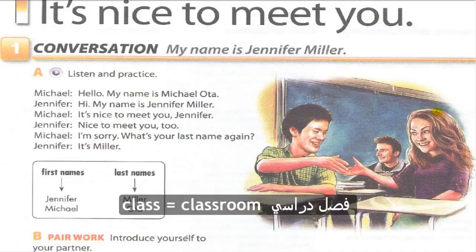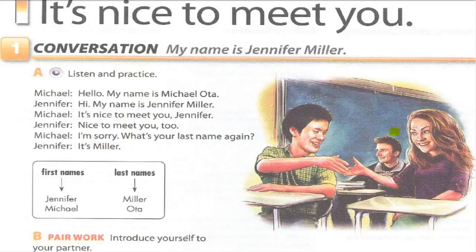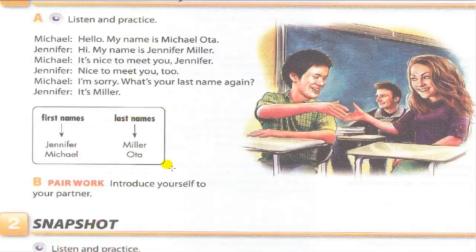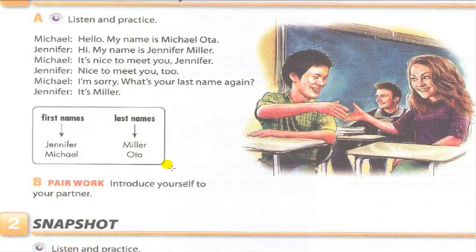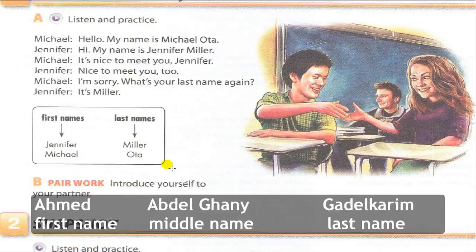We are in a class. This is Michael Oda — Jennifer Miller. First name: Jennifer. Last name: Miller. Michael — first name; Oda — last name. Example of name structure: first name, middle name, last name. For example: Ahmed Abdel-Ghani Qadel-Kareem — first name Ahmed, middle name (father's name) Abdel-Ghani, last name (family name) Qadel-Kareem.